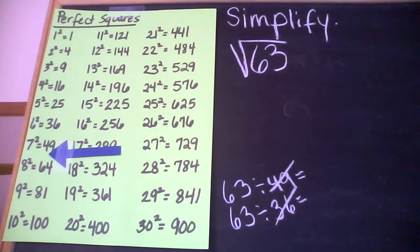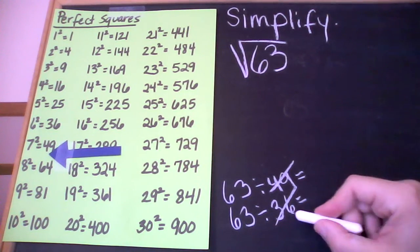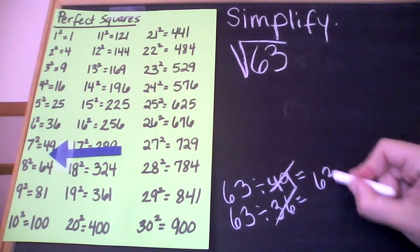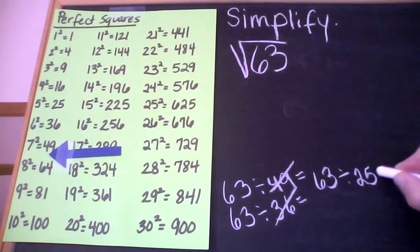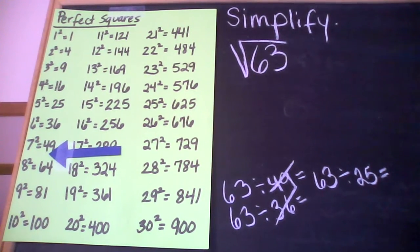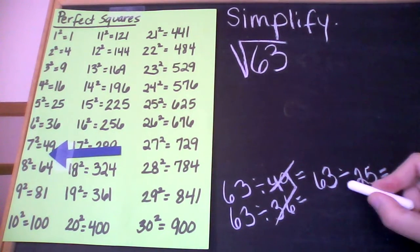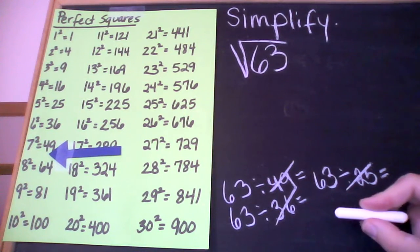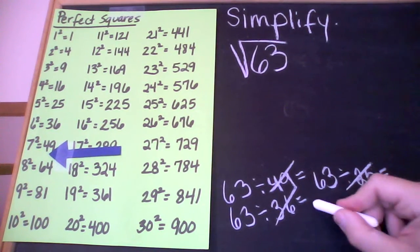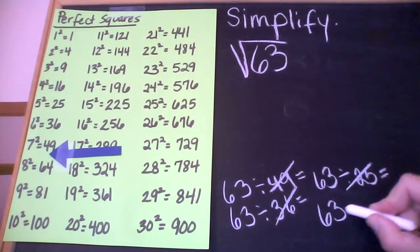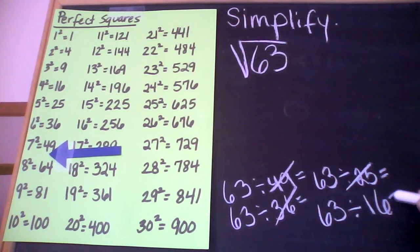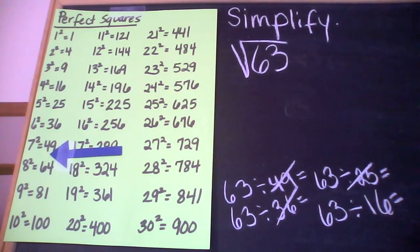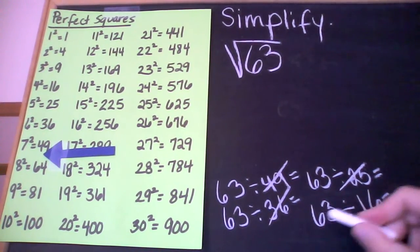So I go on to the next perfect square of 25. I'm going to do 63 divided by 25. Again, when I do this division, I get a decimal number, so it does not work. I continue. I do 16 next. 63 divided by 16 — again, I am not getting a whole number when I do this division, so I need to continue.